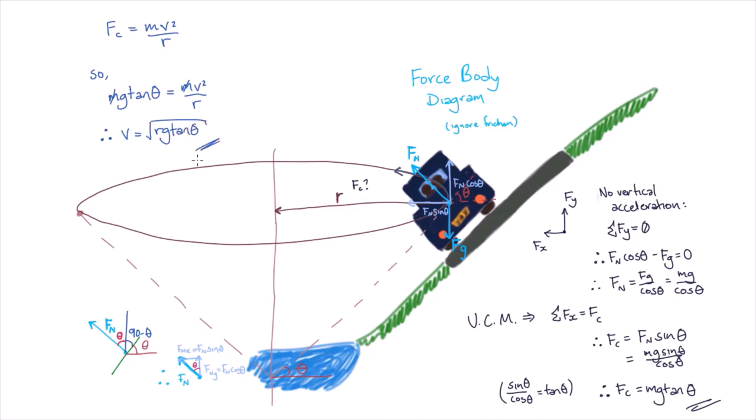Let's plug in some values. We'll use a car mass of 1200 kilograms, a banking radius of 20 meters, and a bank angle of 5 degrees, to find the centripetal force and the car's velocity.